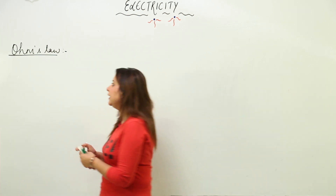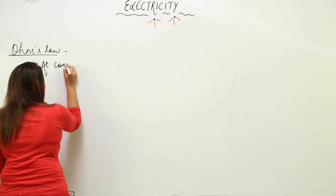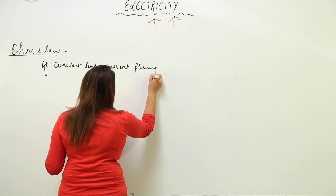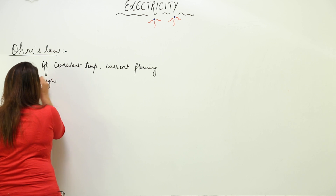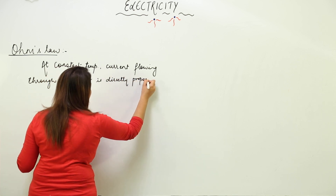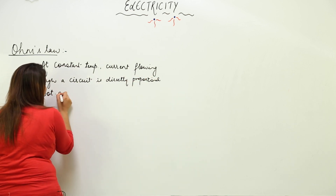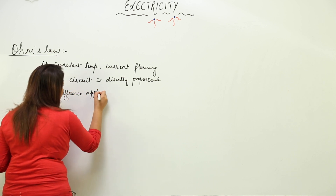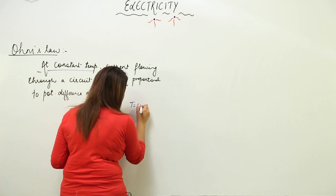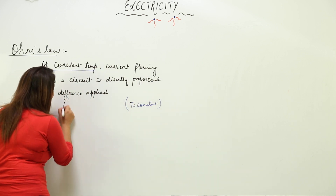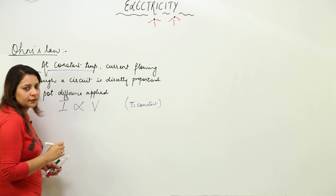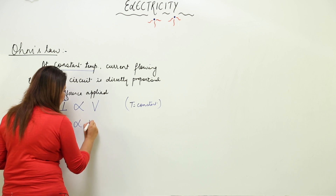Scientist Ohm stated that at constant temperature, the current flowing through a circuit is directly proportional to the potential difference applied. So at constant temperature, I is directly proportional to V, meaning current varies directly with the potential difference applied.